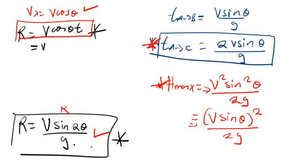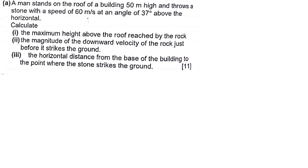Now the third case — I'll explain it using this question. A man stands on the roof of a building 50 meters high and throws a stone with a speed of 60 meters per second at an angle of 37 degrees above the horizontal. Calculate: A — the maximum height above the roof reached by the rock; B — the magnitude of the downward velocity just before it strikes the ground; C — the horizontal distance from the base of the building to where the stone strikes. That last part is the range.